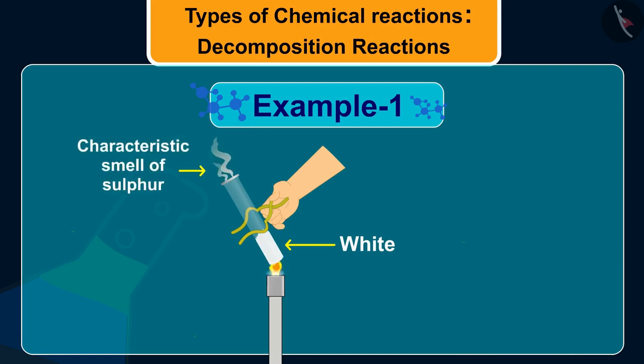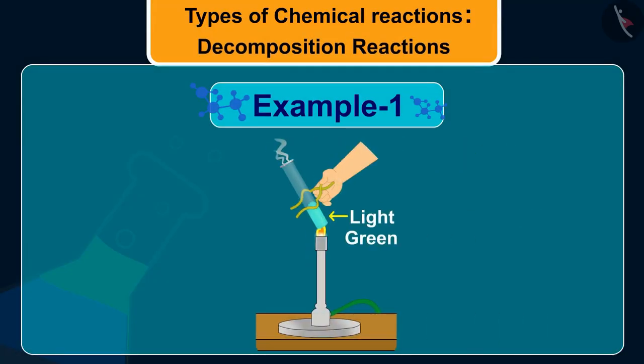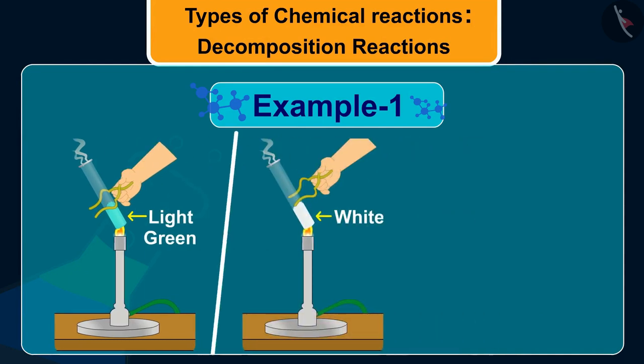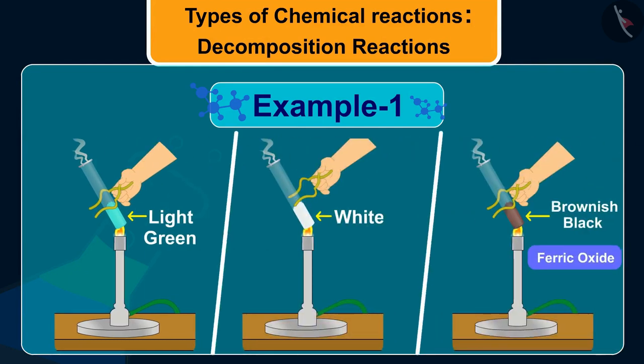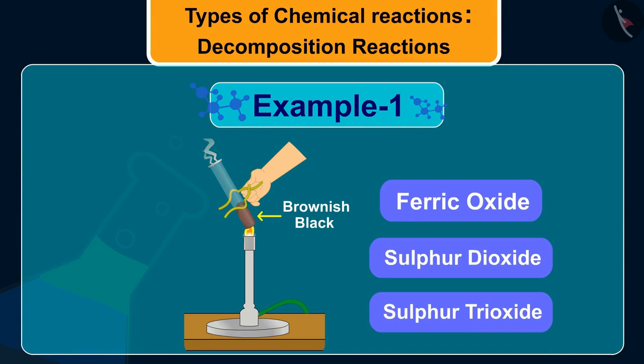On further heating of the white substance, it will turn into brownish black color. So we can say that ferrous sulfate crystals decompose to form ferric oxide which is brown in color, sulfur dioxide, and sulfur trioxide.